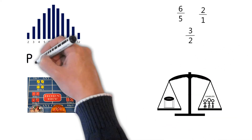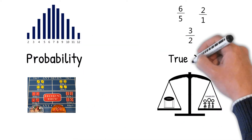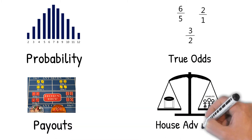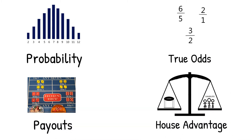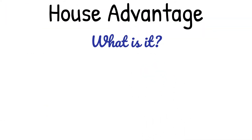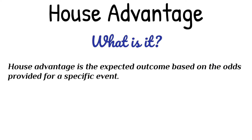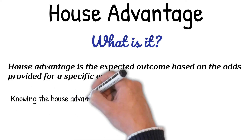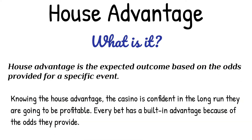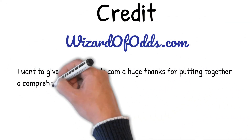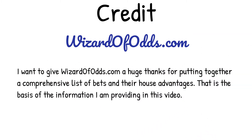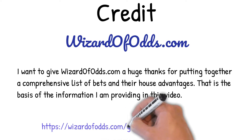Welcome to the Craps Lab. Let's talk about probability, true odds, payouts, and the house advantage. House advantage is the expected outcome based on the odds provided for a specific event. Knowing the house advantage, the casino is confident that in the long run they are going to be profitable. Every bet has a built-in advantage because of the odds they provide. Credit to WizardOfOdds.com — a huge thanks for putting together a comprehensive list of bets and their house advantages. That is the basis of the information I am providing in this video. I'll include the link in the video description.